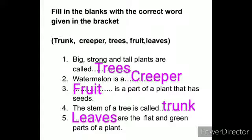Fourth question: the stem of a tree is called dash. Answer is trunk. Dash are the flat and green parts of a plant. Answer is leaves.